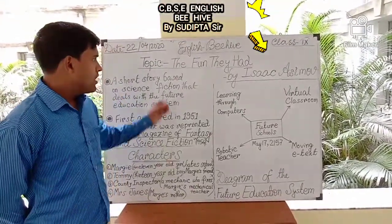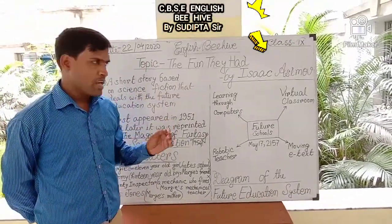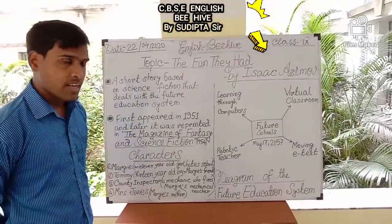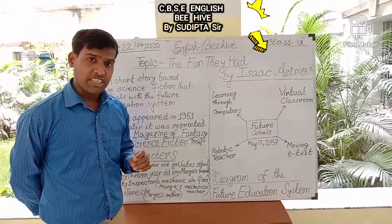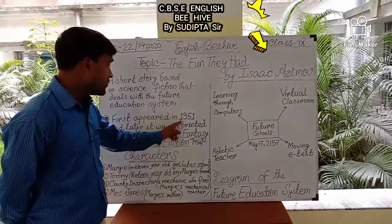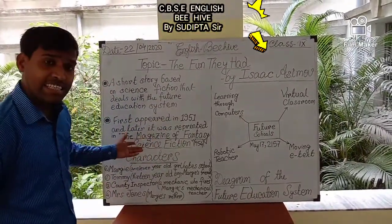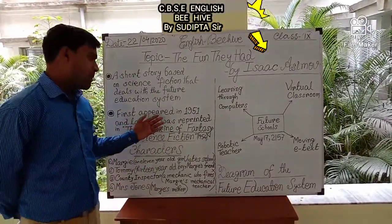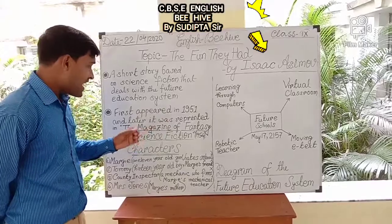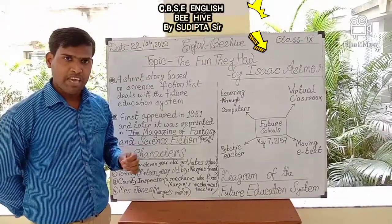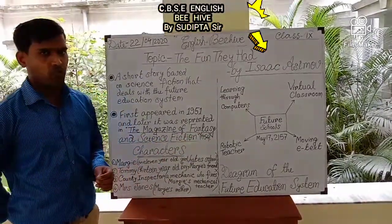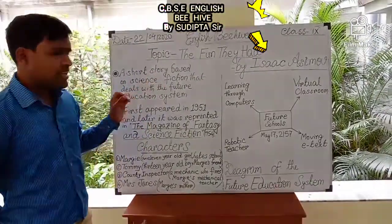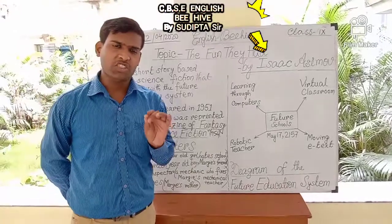Isaac Asimov, our prolific writer, wrote 'The Fun They Had' in the year 1951. It was later reprinted in the magazine of Fantasy and Science Fiction and published in the year 1954. So this topic is purely based on science fiction.